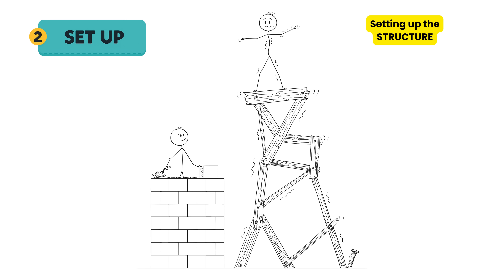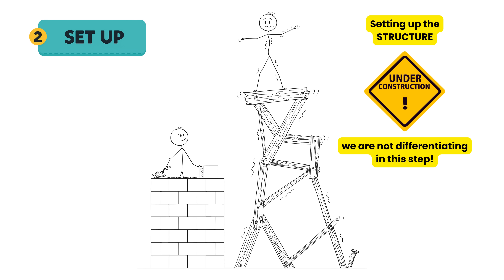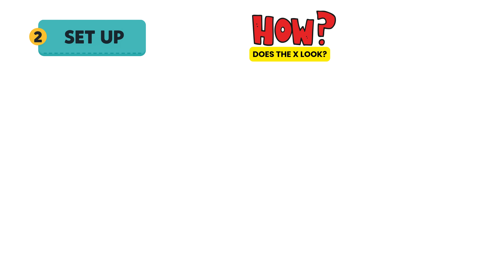The second step in our differentiation game plan is set up. What we do in this step is set up the structure for how we're going to differentiate. Very important: we're not differentiating yet, we're just laying out the structure. And that structure depends on what the x looks like in each term.